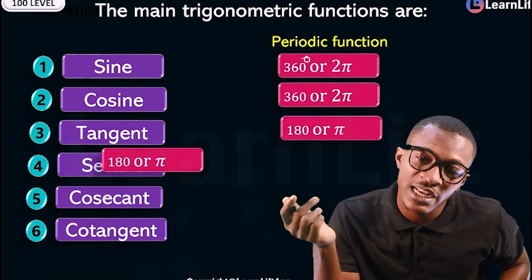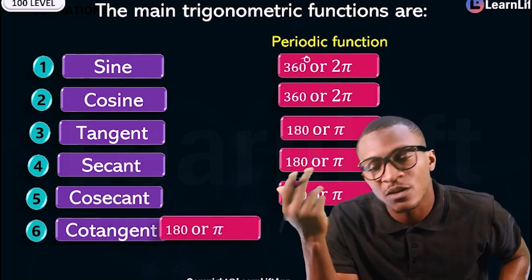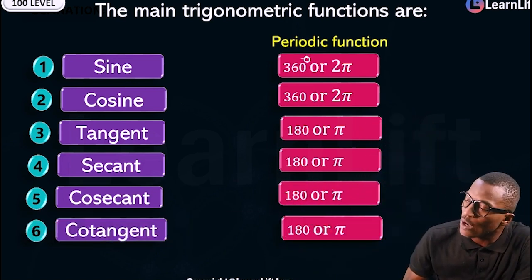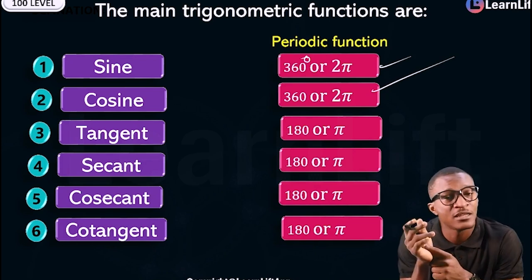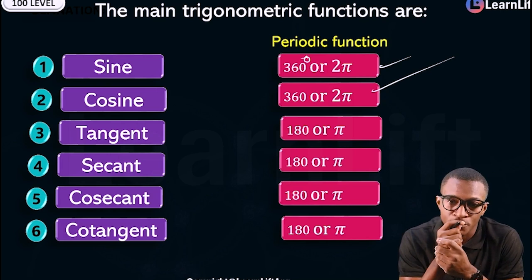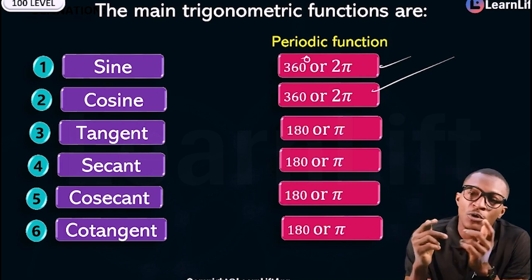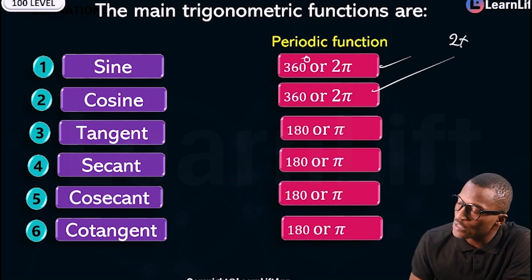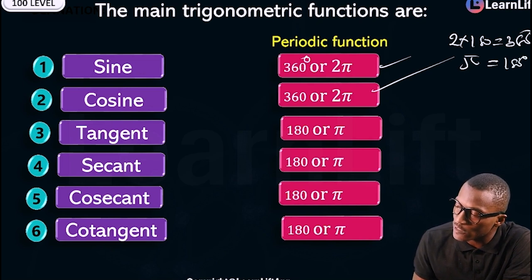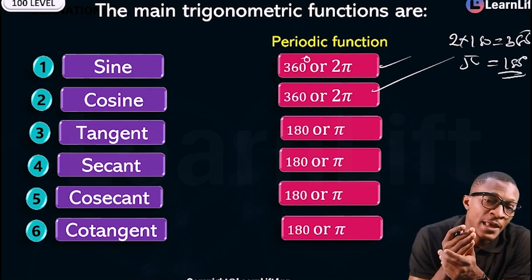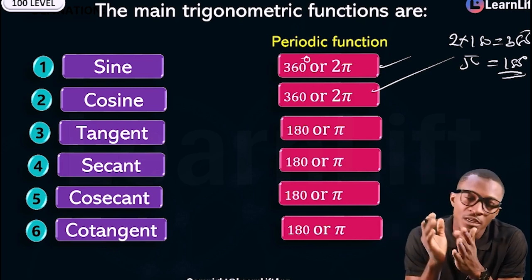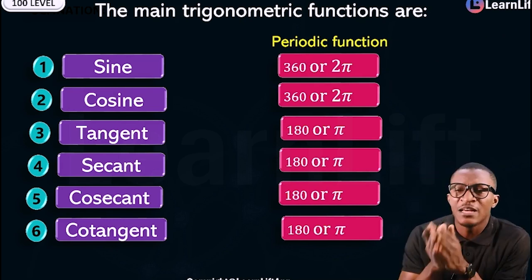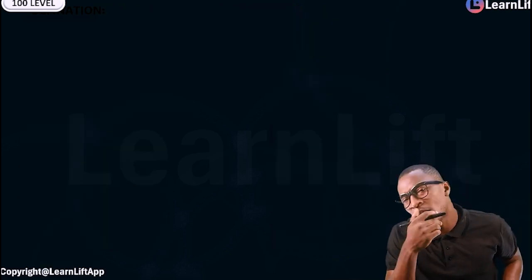If they ask you in the exam, note that only these two are said to have a periodic function of 2π radians. What is the periodic function for sine? 2π radians. 2π radians is the same thing because one π radian is 180, so 2 times 180 will give 360. Because one π radian is equal to 180 degrees. So sine and cosine are 360, tangent and so on and so forth. Now that you have to understand, let's now take one past question.